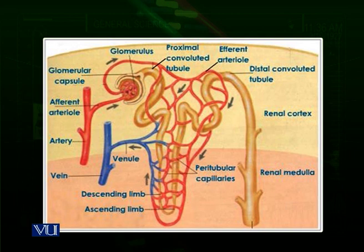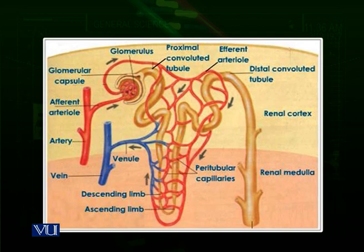Each nephron is surrounded on almost every side by blood vessels — first an artery, then a capillary network, and then going back toward the venule. The nephron is richly supplied with blood vessels, which is a requirement for the exchange of waste materials between the blood and the renal tubule.